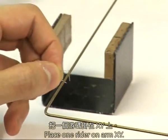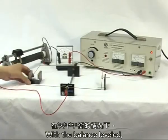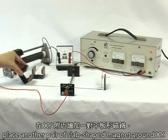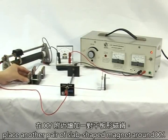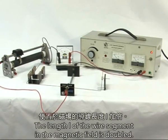Place one rider on arm XY. With the balance levelled, place another pair of slab-shaped magnets around XY. The length L of the wire segment in the magnetic field is doubled.